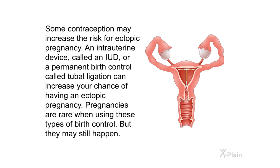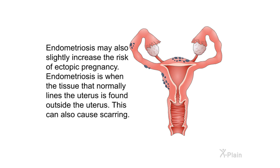Some contraception may increase the risk for ectopic pregnancy. An intrauterine device (IUD) or a permanent birth control method called tubal ligation can increase your chance of having an ectopic pregnancy. Pregnancies are rare when using these types of birth control, but they may still happen.